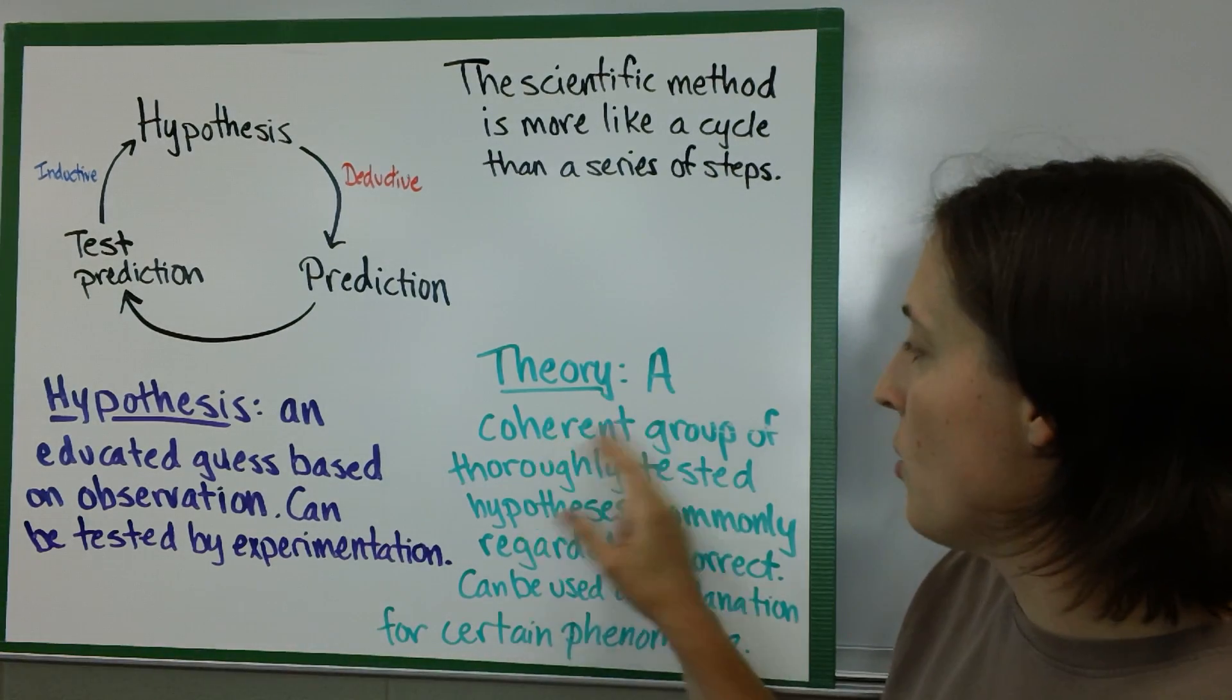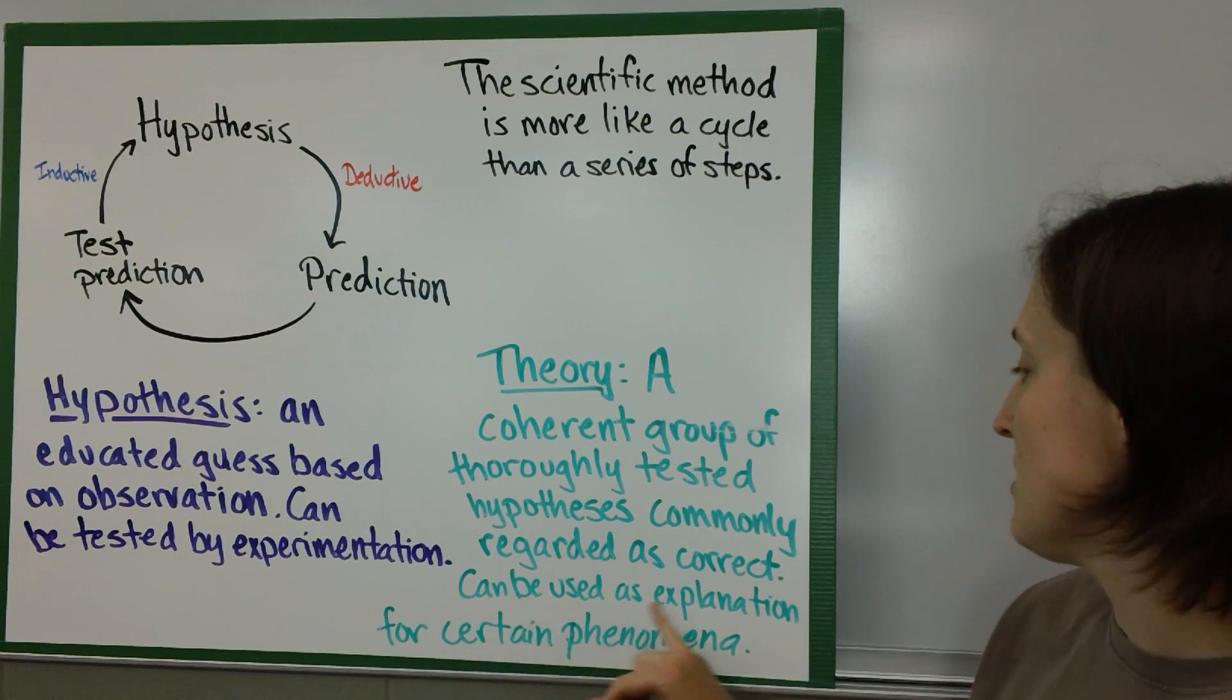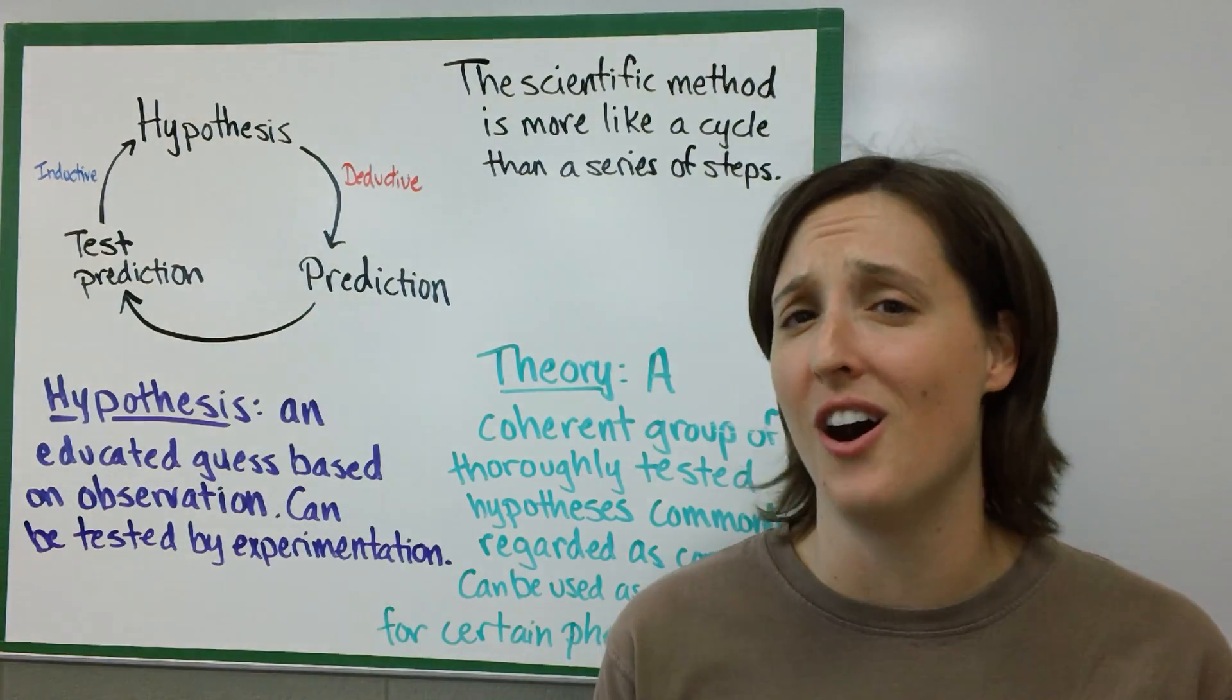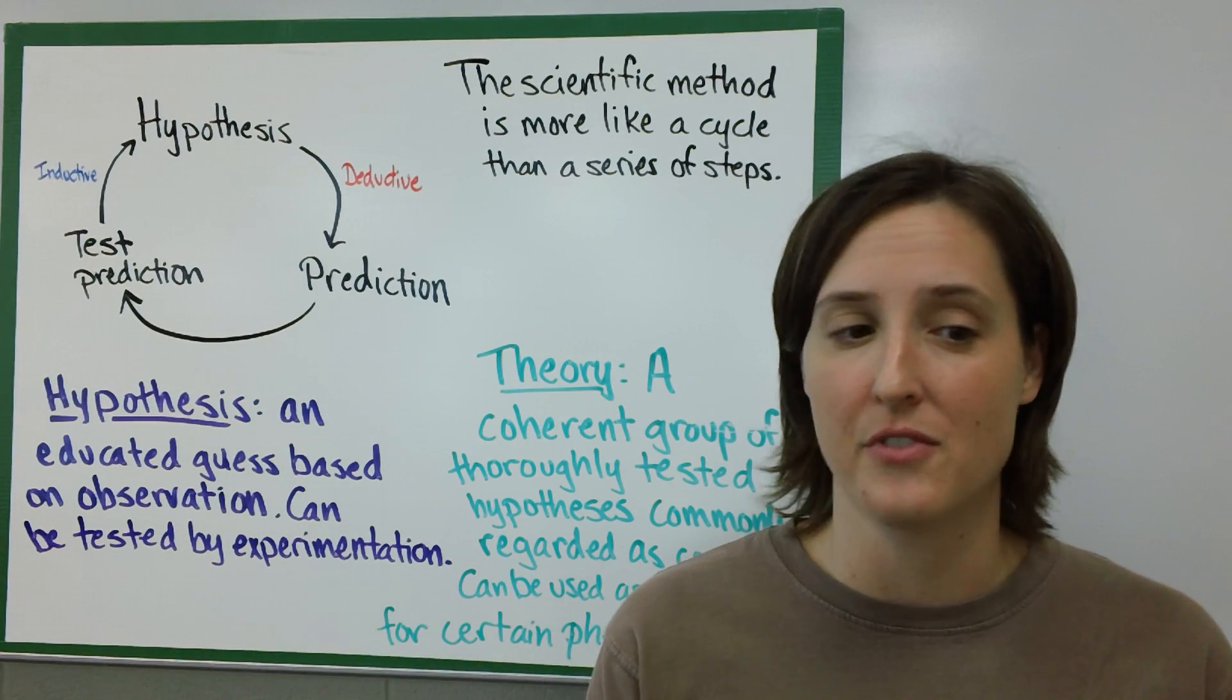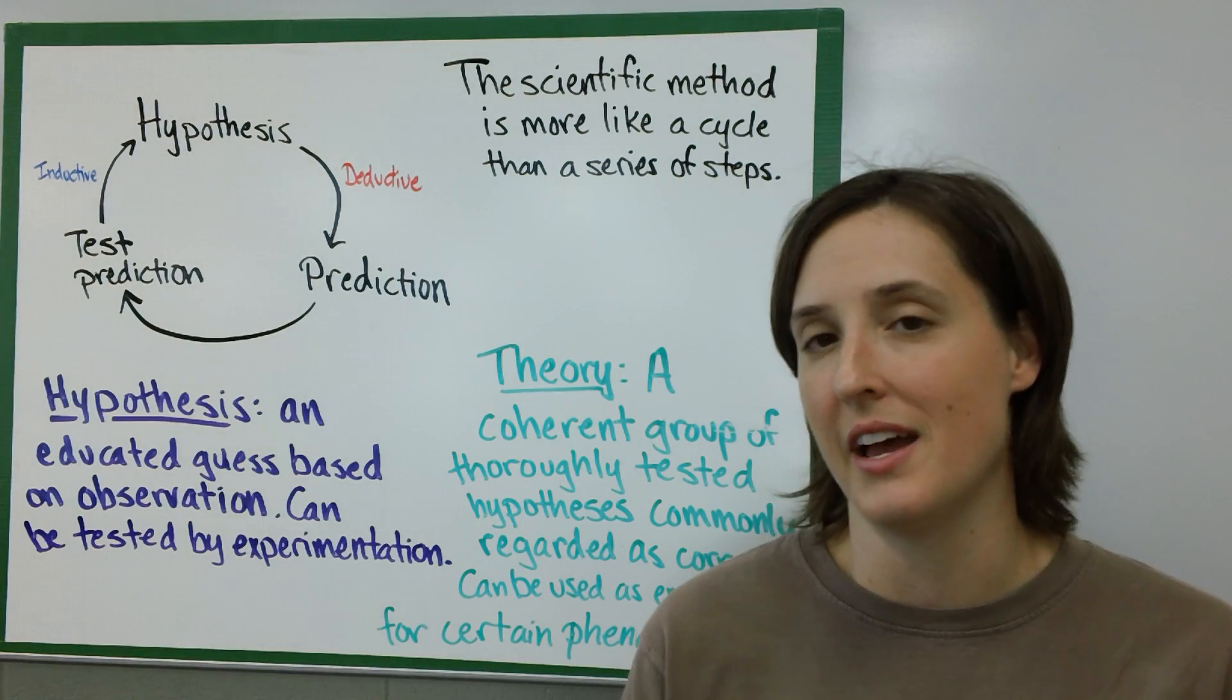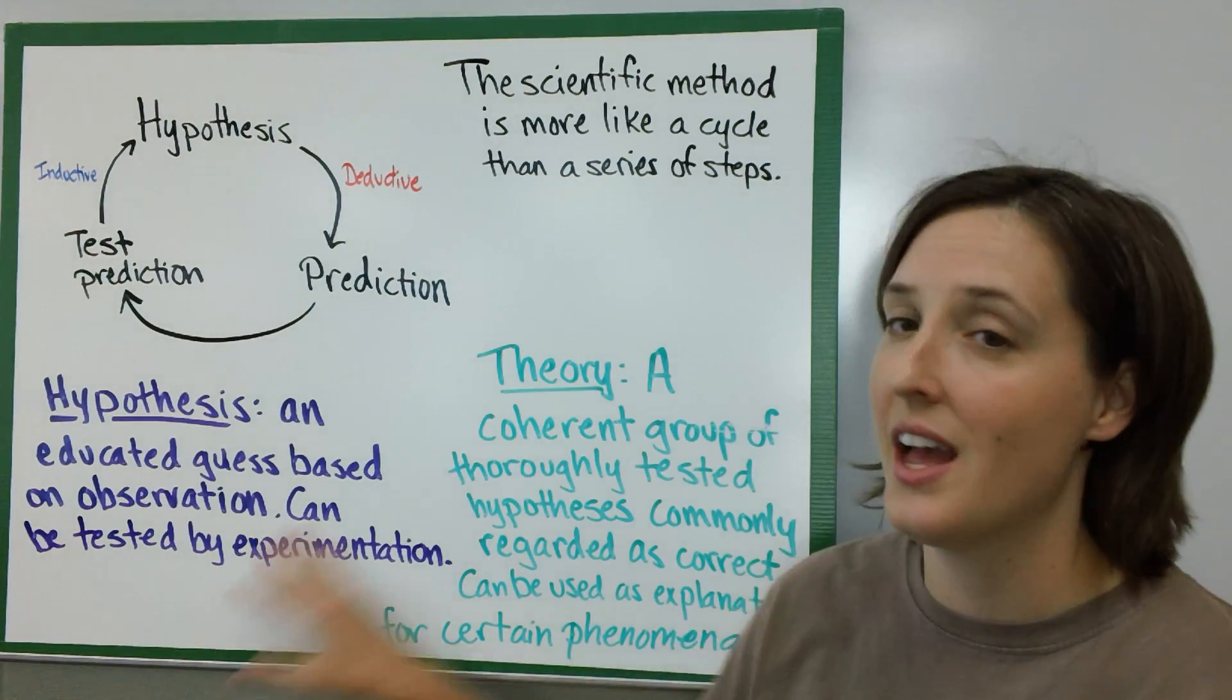A theory is a coherent group of thoroughly tested hypotheses commonly regarded as correct. This can be used as explanation for a certain phenomenon. The theory of gravity—it's been tested so often it is actually a law. Every time I drop something and it falls to the ground, I know there's an explanation that's been tested over and over again and every time that experiment has been tried it comes out the same way no matter what. That's the difference between a hypothesis and a theory.